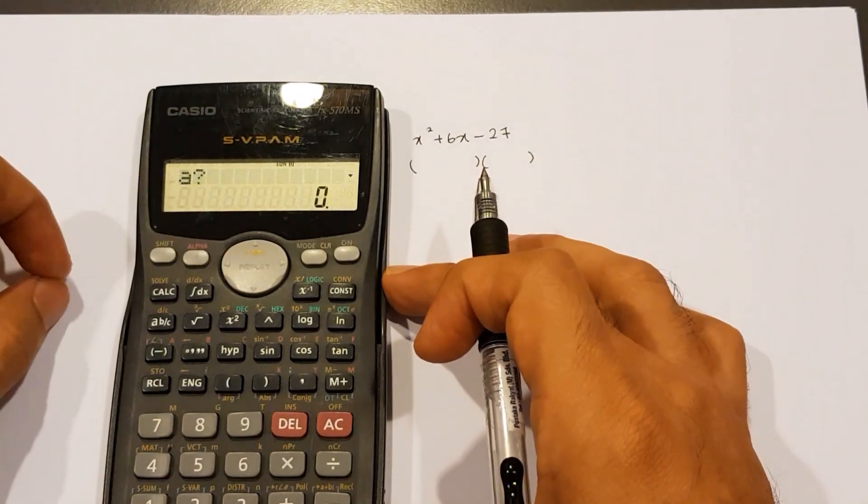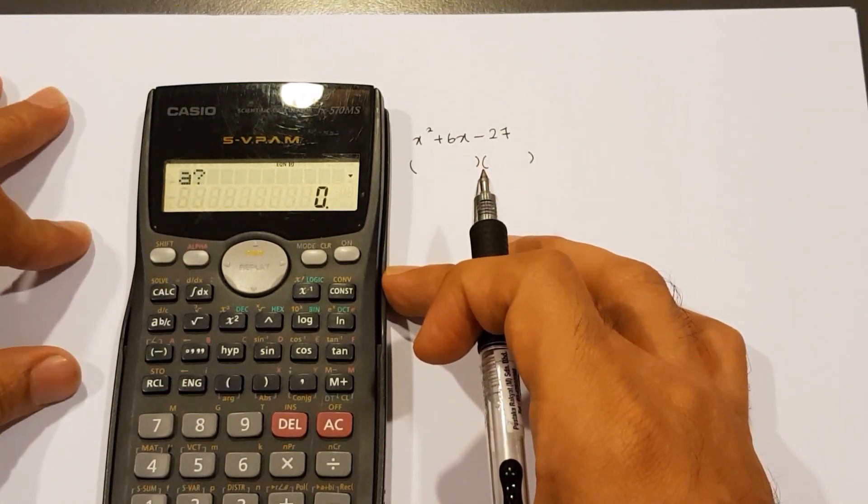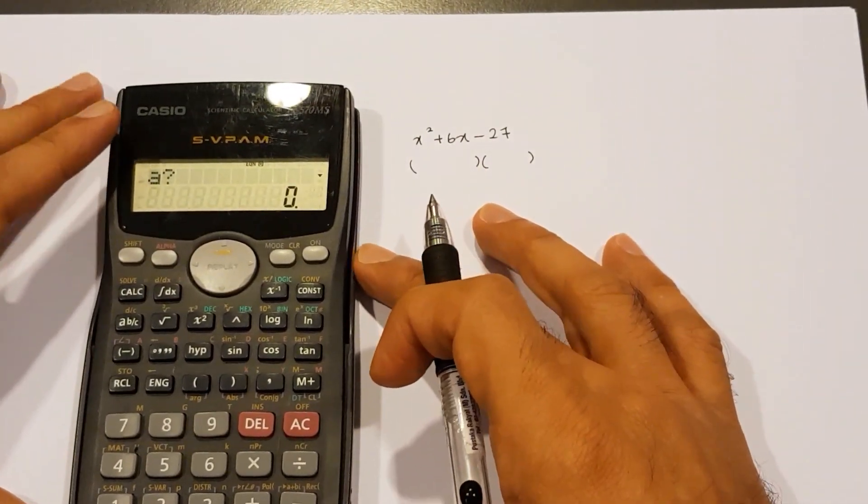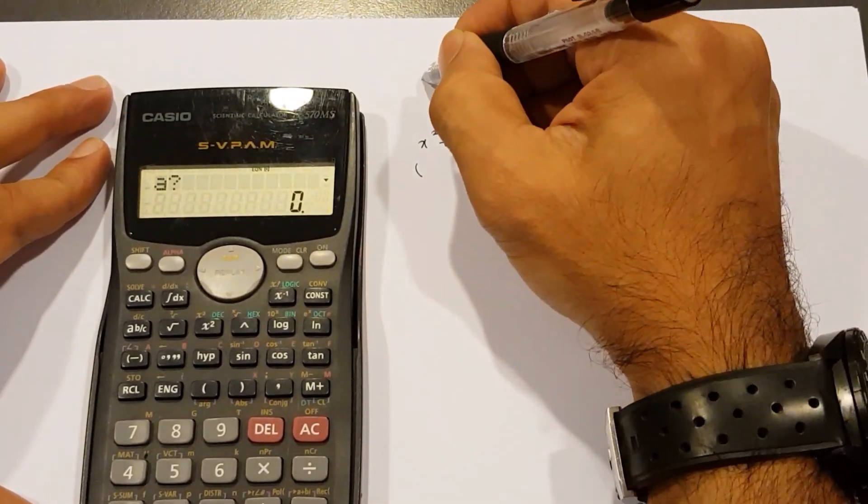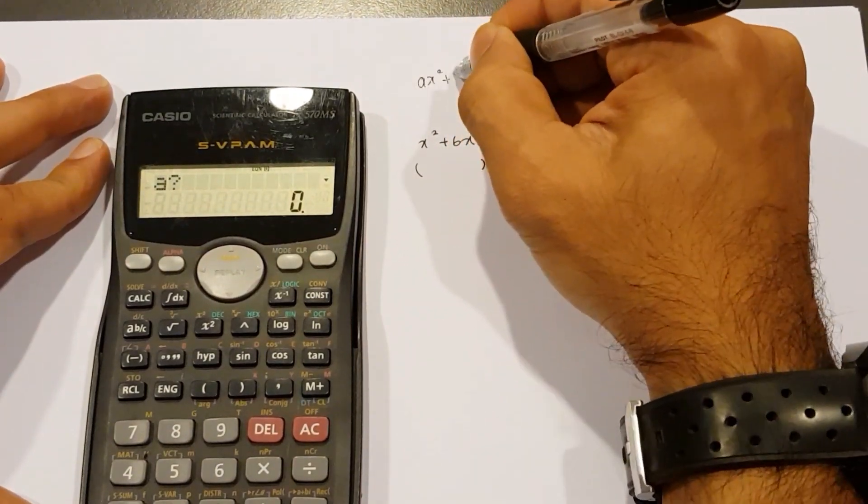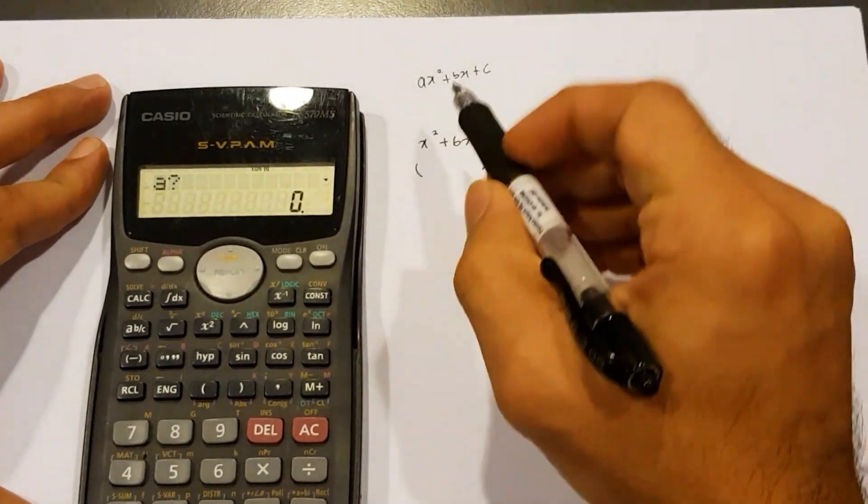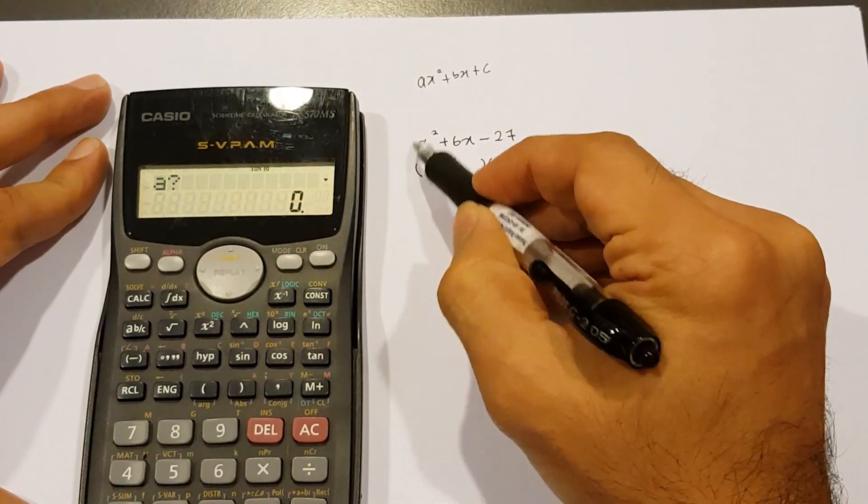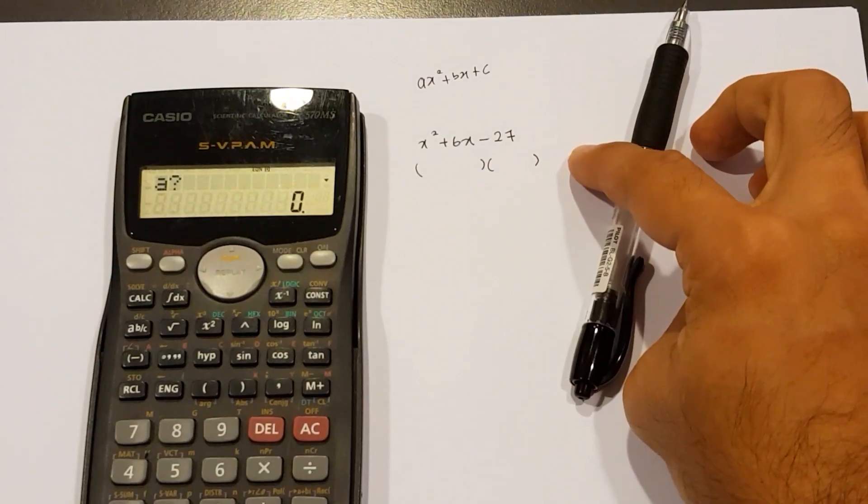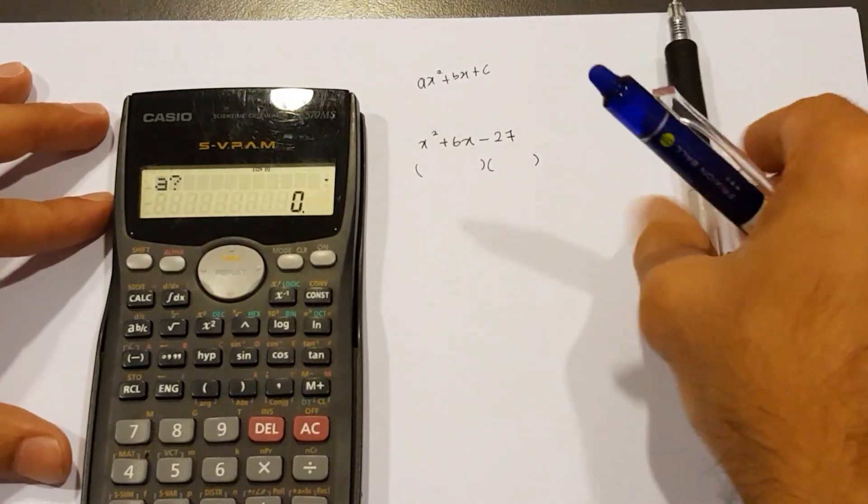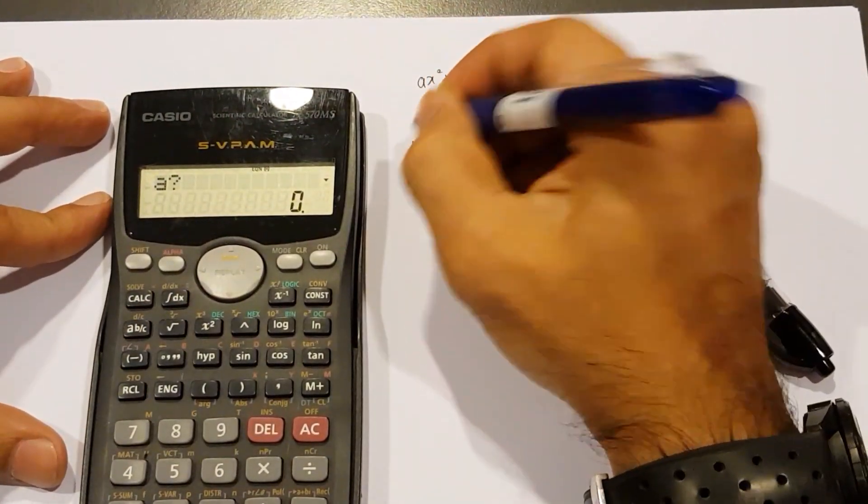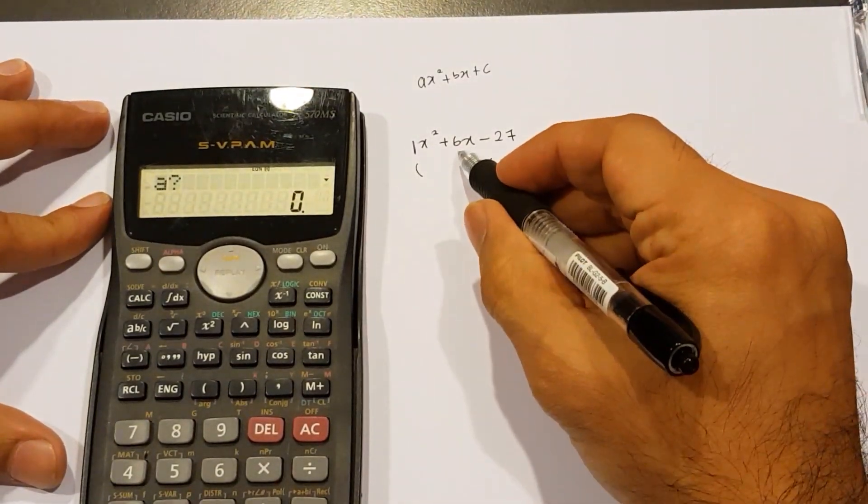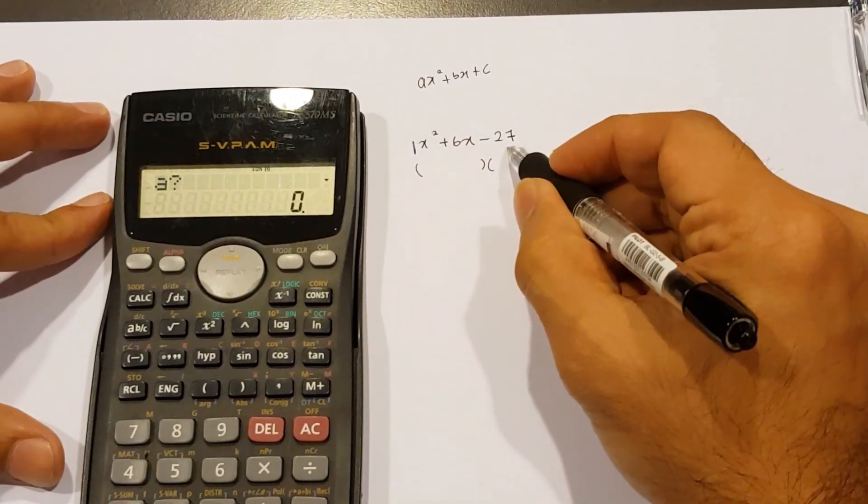We have A. This is because every quadratic equation comes with A, B, and C, because the general form is A x squared plus Bx plus C. A is basically the number in front of the x squared, but right now in this equation I've got no number. That simply means the number here is actually 1. The B number here is positive 6. The C number is negative 27.